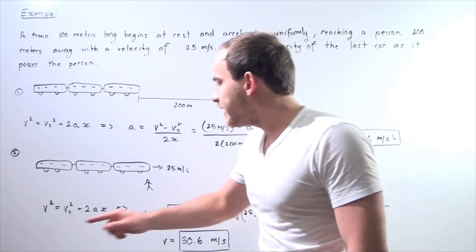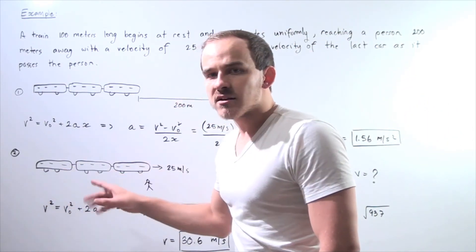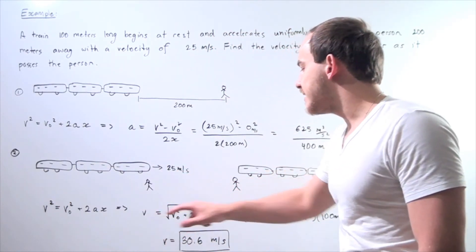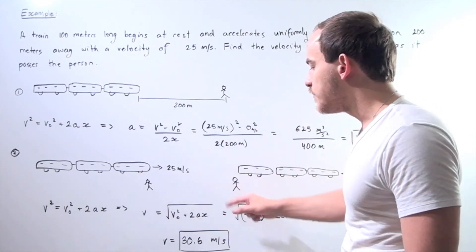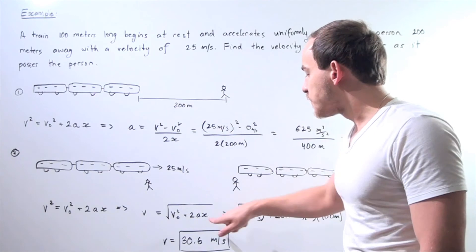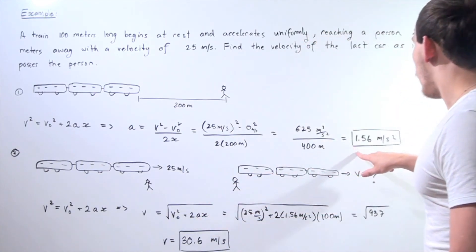So let's plug in our unknown. Or actually before we plug in, let's take the radical of both sides to get rid of this 2. So we get our final velocity is equal to radical v initial squared plus 2ax. So a is 1.56, v naught squared is 625, and our x is 100.